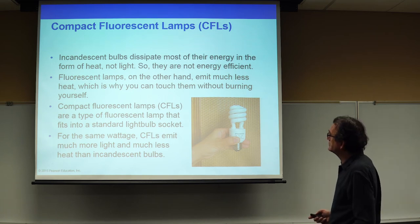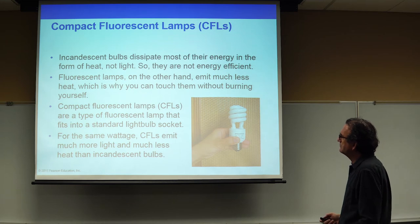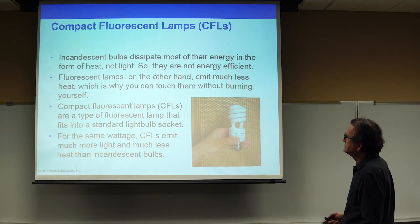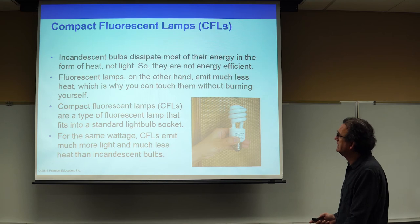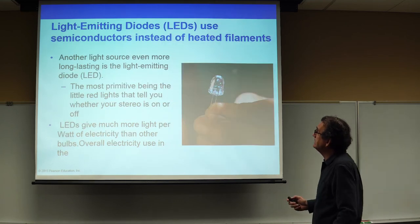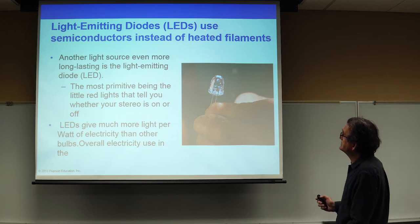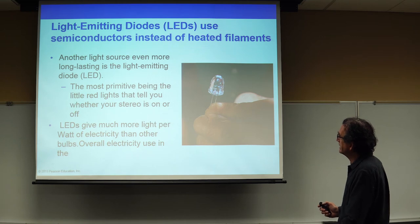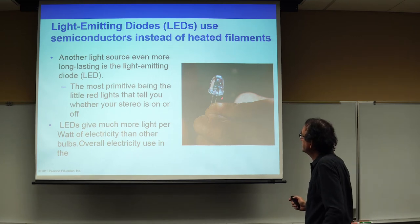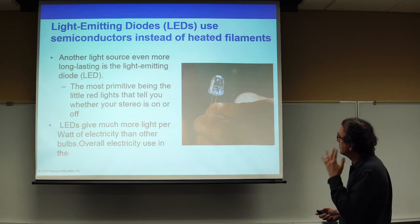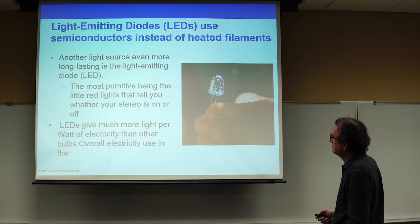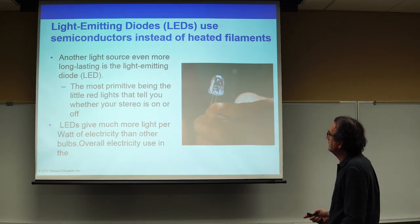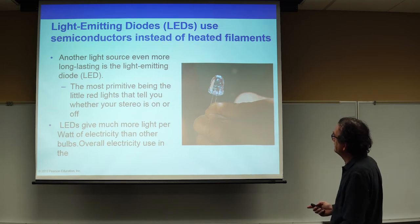Now we have LED lights that are even more efficient and cheaper. For the same wattage, the fluorescent lamp emits much more light and much less heat than the incandescent bulb, which is now going completely by the wayside in favor of more energy-efficient lamps. The light-emitting diode — LED — has been perfected to make very bright lights, and LEDs get much more light per watt of electricity than other bulbs, making them very popular for energy-efficient lighting in homes.